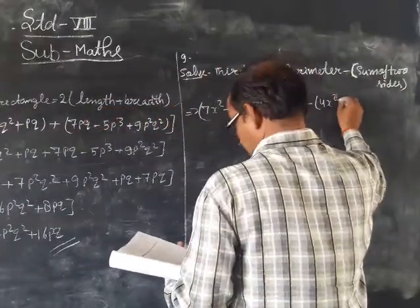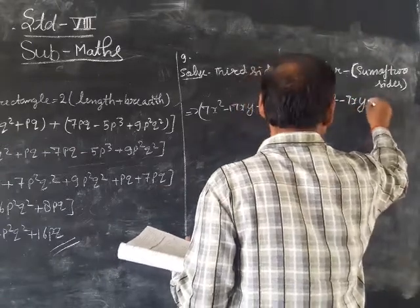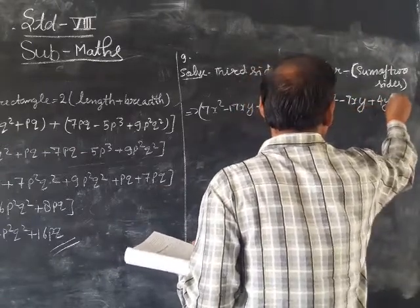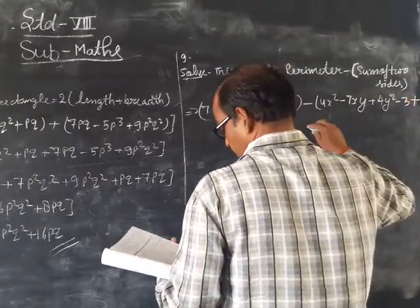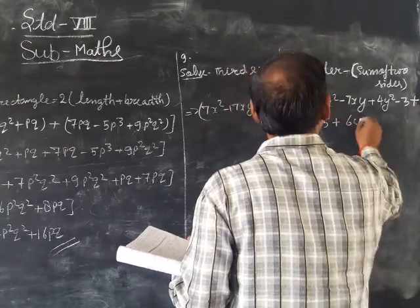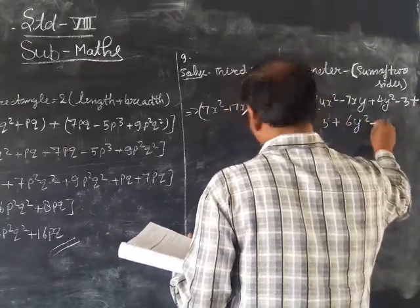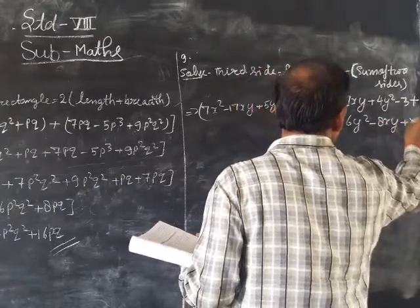The two sides are 4x² minus 7xy plus 4y² minus 3, plus the second side which is 5 plus 6y² minus 8xy plus x².